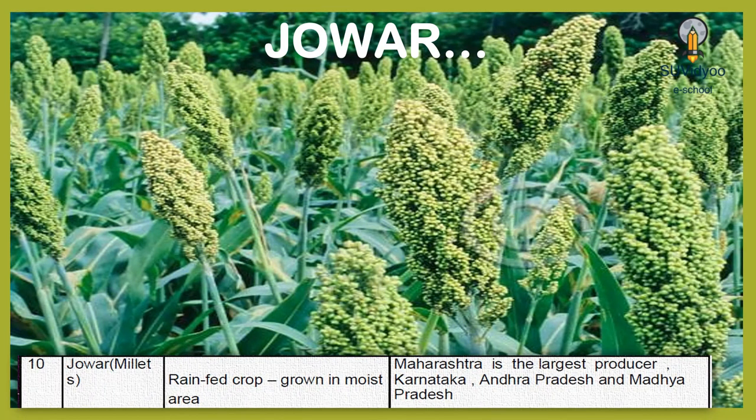Jowar is a millet crop. It is a rain-fed crop grown in moist areas. Maharashtra is the largest producer, followed by Karnataka, Andhra Pradesh and Madhya Pradesh.